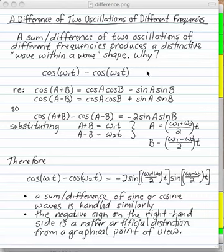We've seen what happens if you add two oscillations of the same frequency. What happens if you add or subtract two oscillations of different frequencies? We're going to produce the famous distinctive wave within a wave shape, amplitude modulation. Why?